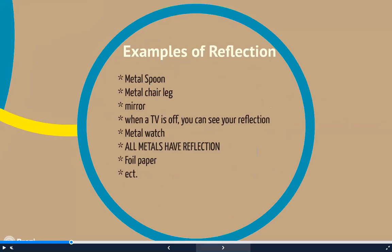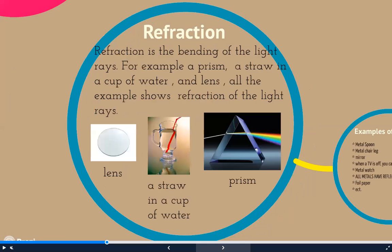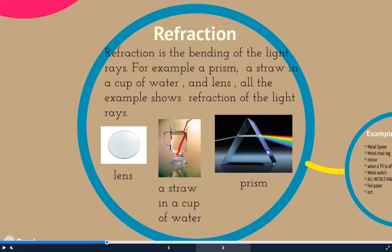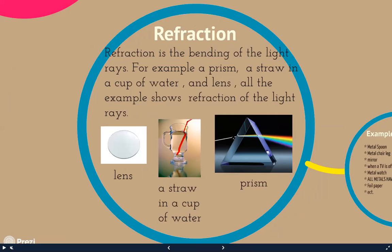Examples of reflection include metal spoons, metal chair legs, mirrors, TVs when off, metal watches, and foil paper. Refraction is the bending of light — for example, a prism, a straw in a cup of water, and a lens are all examples of refraction. You can see in the picture that the straw looks bent as the light bends going through the prism.